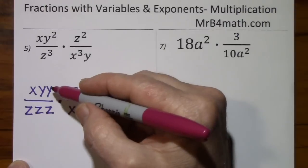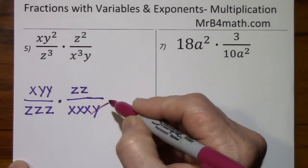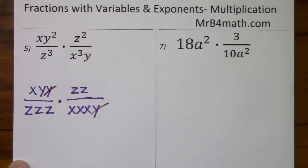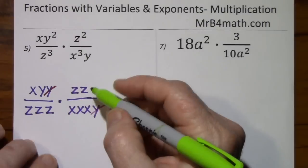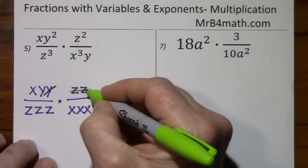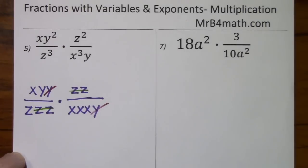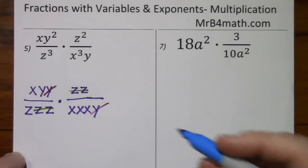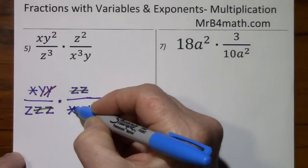And we'll say we have two y's up here, but only one down here. So y cancels y. We have two z's and three z's. So two z's cancel two z's. And this x will cancel one of these.